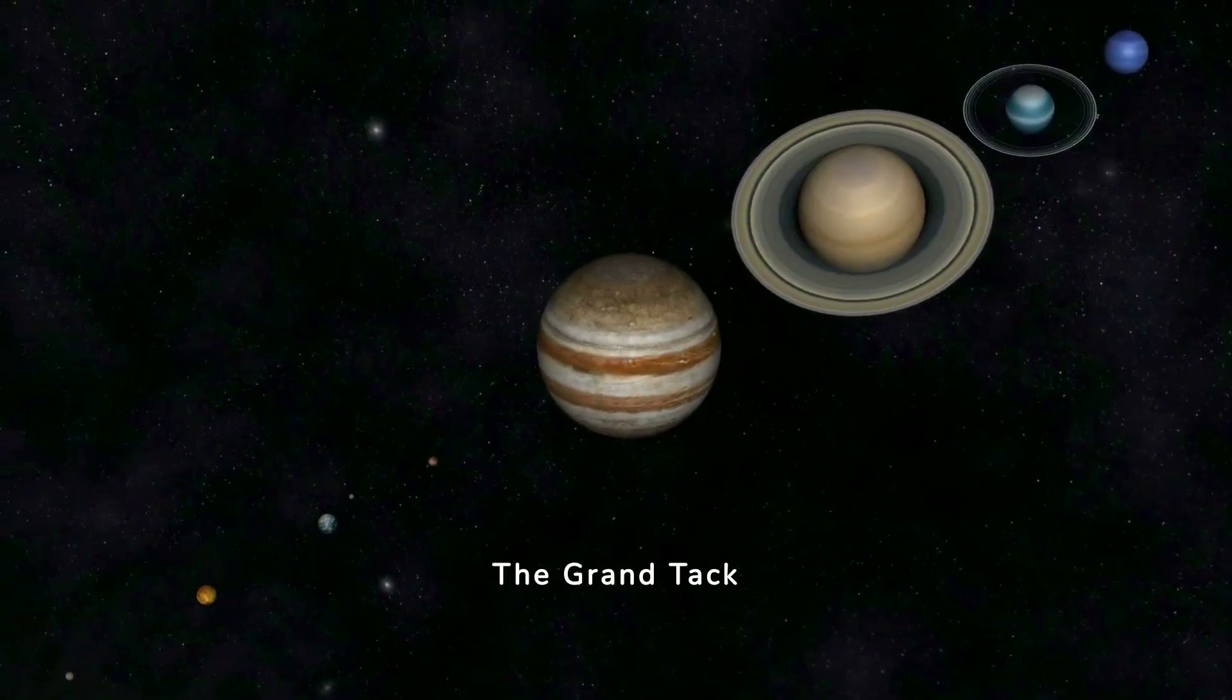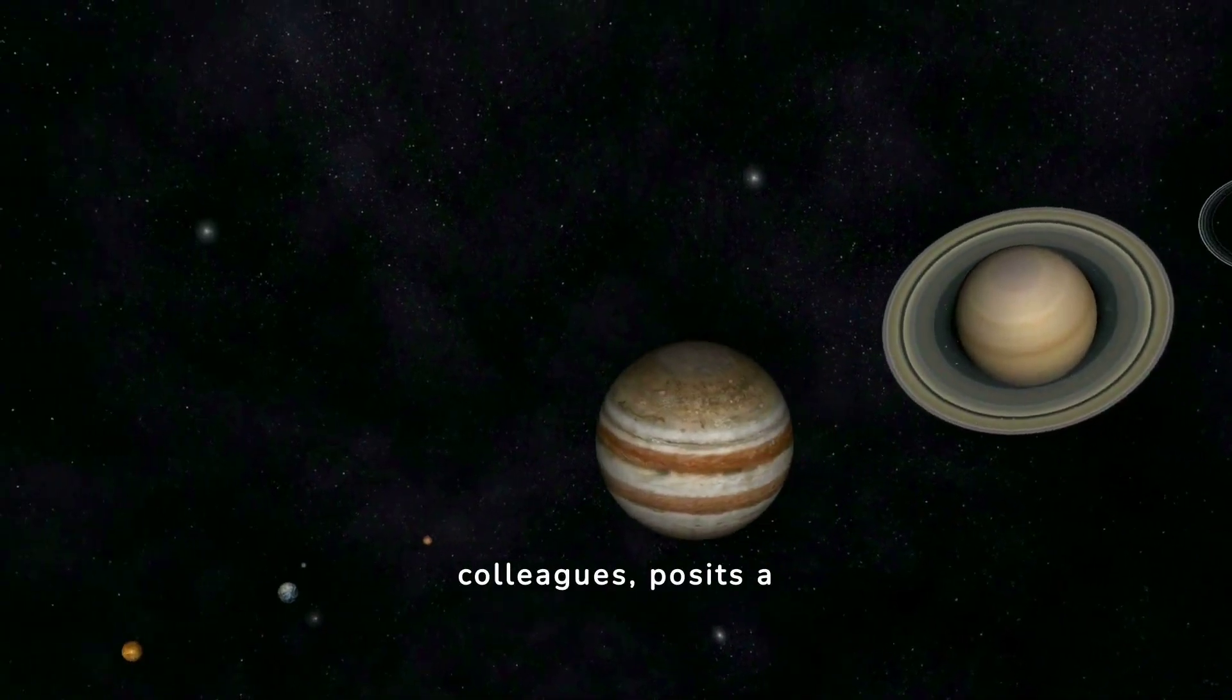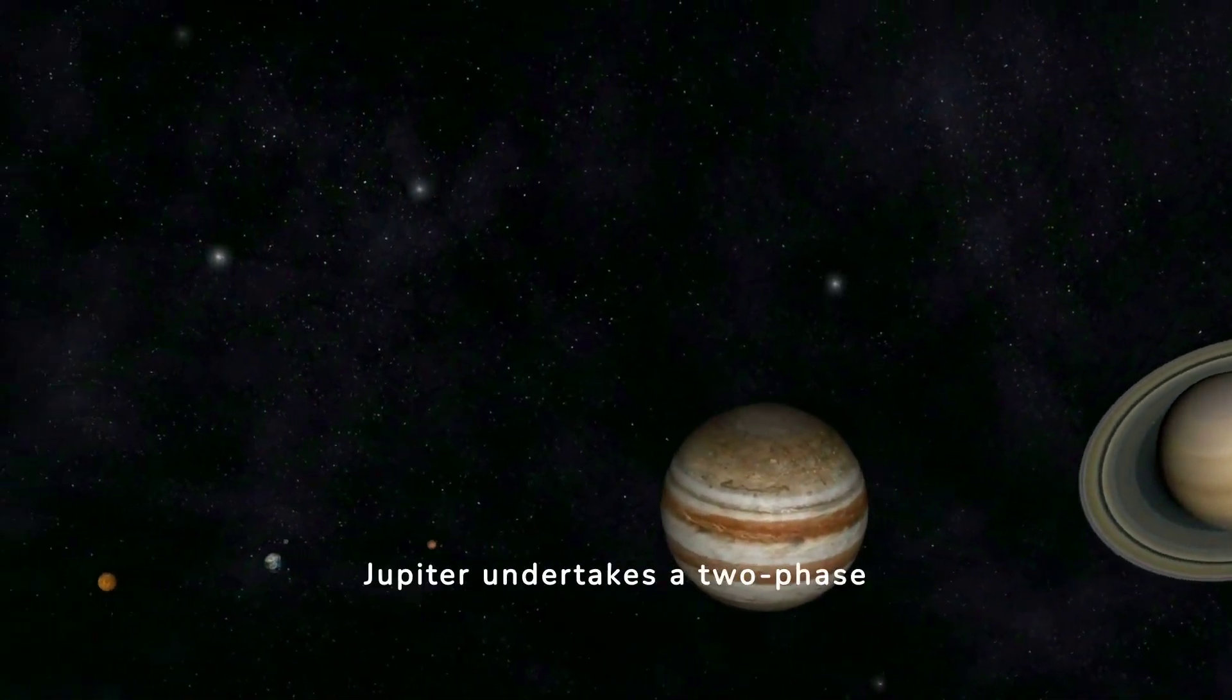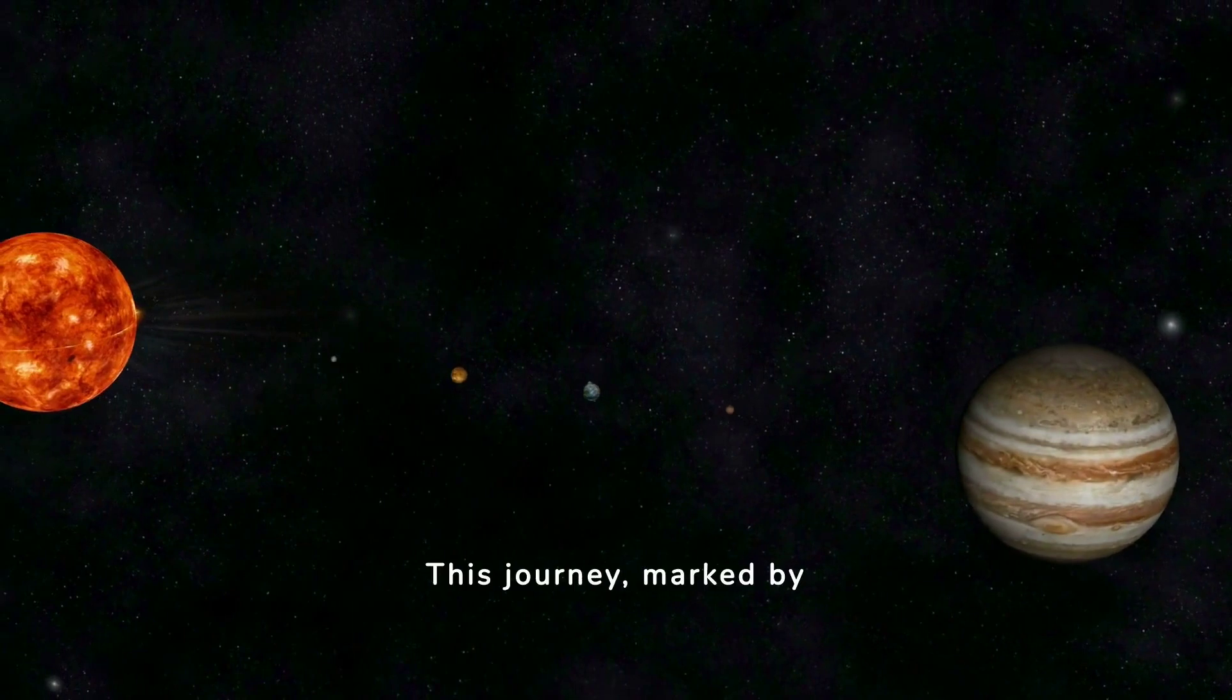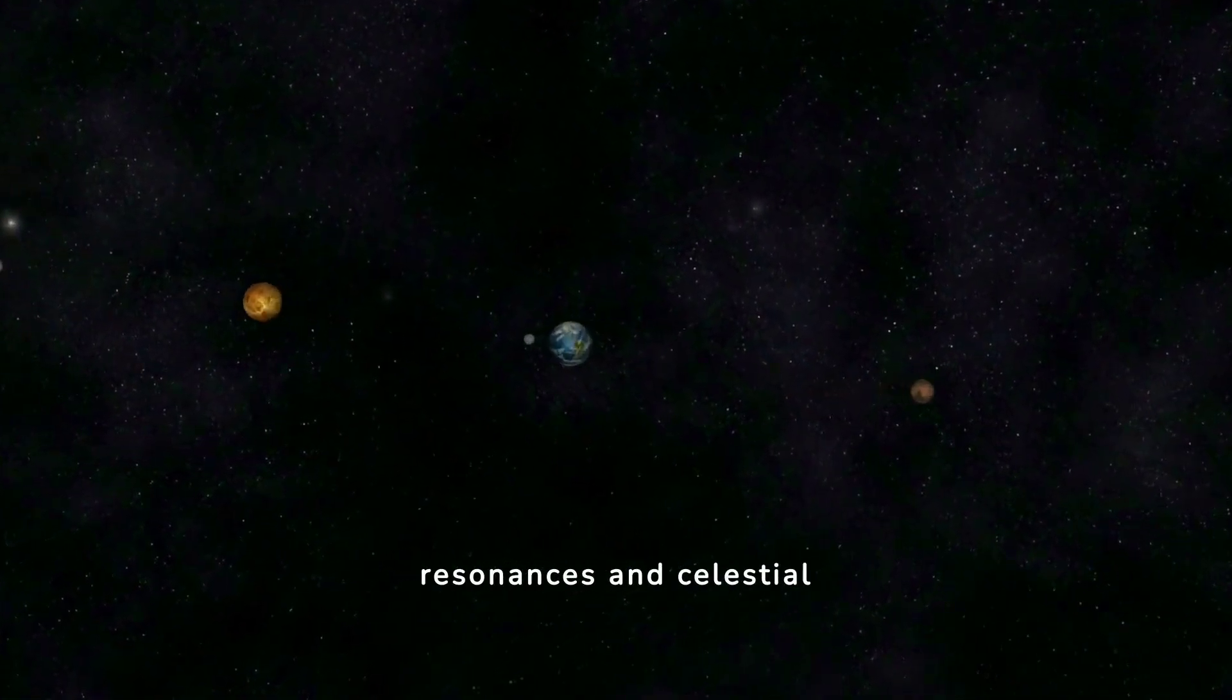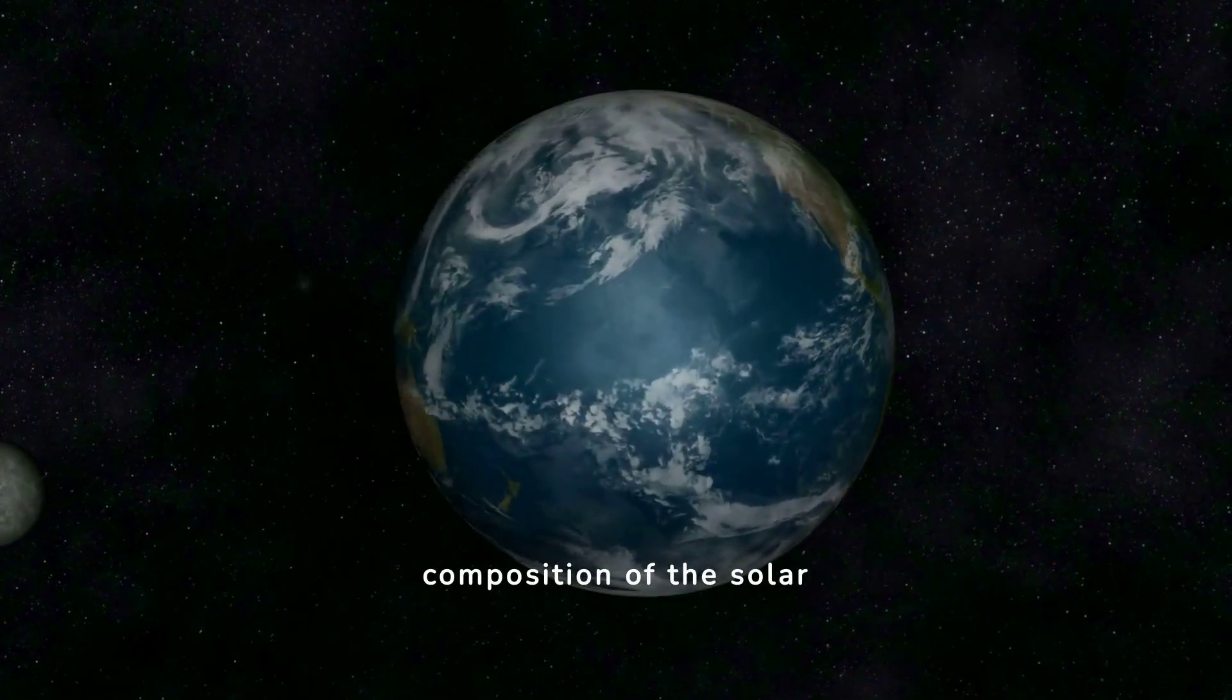The Grand Tack hypothesis, spearheaded by Kevin Walsh and his esteemed colleagues, posits a narrative of cosmic migration wherein the gas giant Jupiter undertakes a two-phase journey from its birthplace near the ice line to its current orbit. This journey, marked by intricate gravitational resonances and celestial choreography, leaves an indelible imprint on the structure and composition of the solar system.